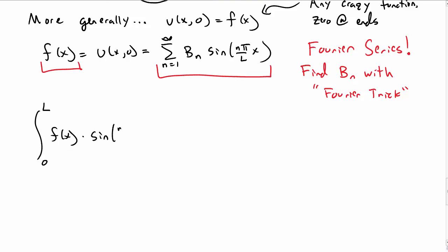So first, we're going to multiply both sides by sine of m pi x over L and integrate from 0 to L. So we do that on both sides. So we've integrated on the right-hand side now, b sub n sine of n pi x over L sine of m pi x over L, where m is not necessarily the same as n.